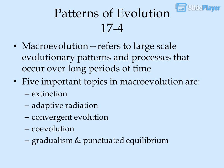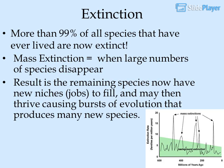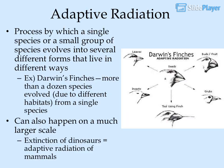Patterns of evolution: macroevolution refers to large-scale evolutionary patterns and processes that occur over long periods of time. Five important topics in macroevolution are: extinction, adaptive radiation, convergent evolution, coevolution, and gradualism vs. punctuated equilibrium. More than 99% of all species that have ever lived are now extinct. Mass extinction occurs when large numbers of species disappear; the result is that remaining species now have new niches to fill, and may then thrive, causing bursts of evolution that produce many new species — adaptive radiation.